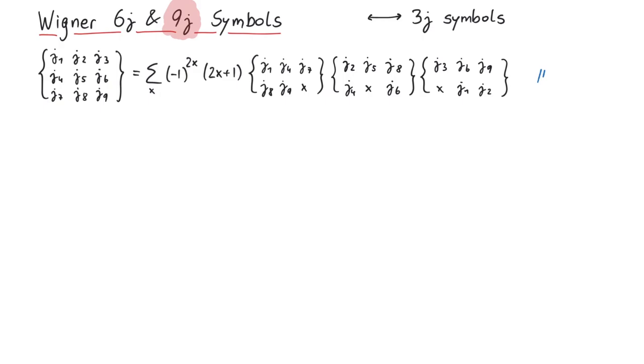In practice, x can take on any half integer and integer value. But most of the time, one of the 6j symbols will be zero. As with the 6j symbols, let's go through the coupling process of four angular momenta, j1, j2, j3, and j4.